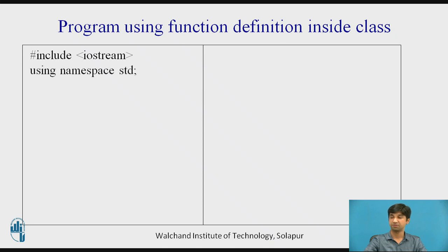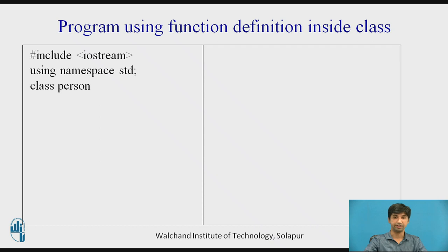Then, 'using namespace std' is used to increase the scope of the identifiers. std stands for standard. The program is about getting input from the user — like his name and age — using a getData function, and displaying the output on the screen. There are two functions: one for input and one for output. The data members are name and age, and output is displayed using the display function.